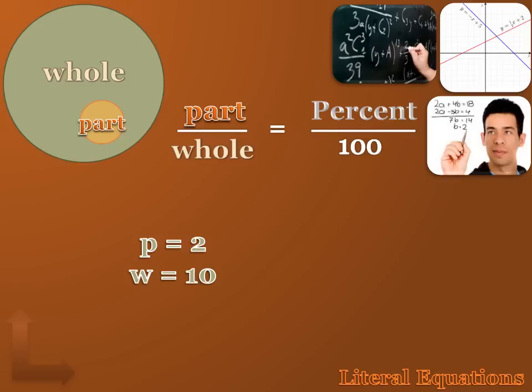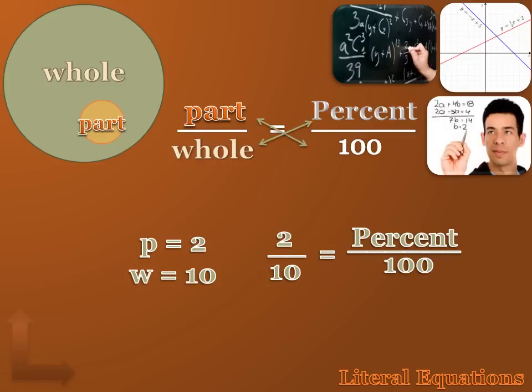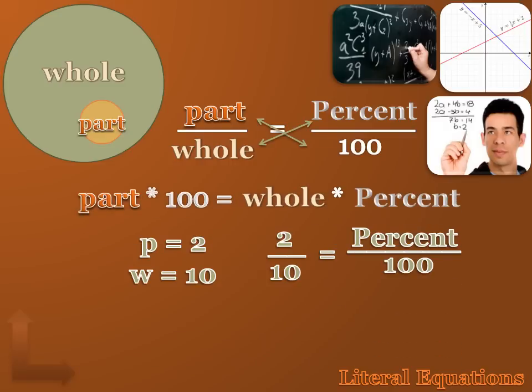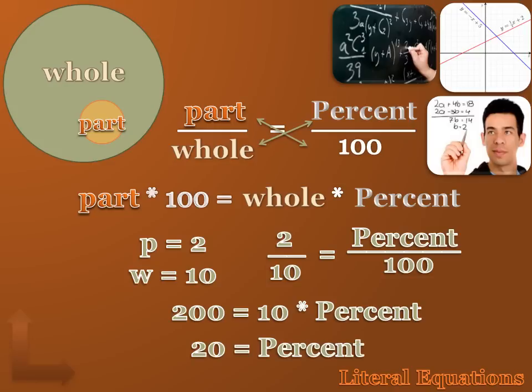Let's look at an example. Let's say that the part was 2 and the whole was 10. I could say that the part is to the whole, 2 is to 10, as the percent is to 100%. Now, back to literal equations. I can take the cross product of this to simplify the solution to this problem. I could say that the part times 100 equals the whole times the percent. And I could rewrite our problem as 2 times 100 or 200 equals 10 times the percent. Or 20 equals the percent.